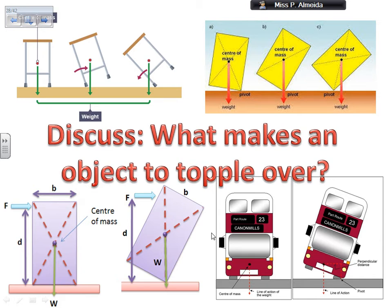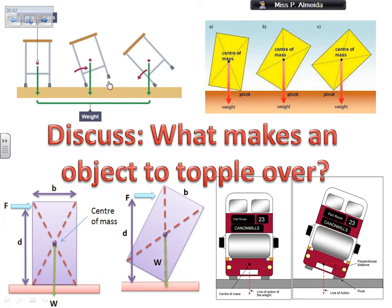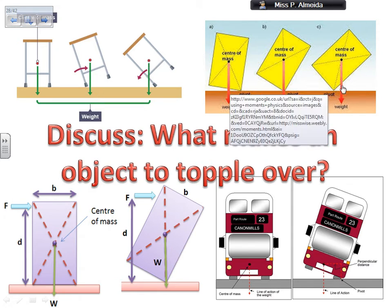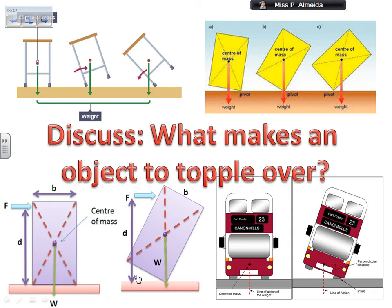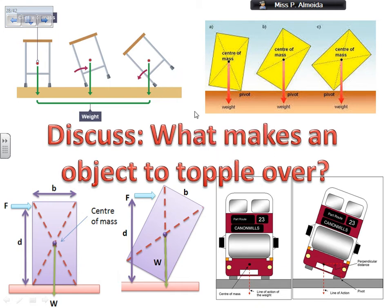So, what do you need to do for an object to be stable or as stable as possible? If you look at all these pictures, you may see that if the center of mass is acting within the base of the object — or within the pivot — the object is stable and not toppling over. But once the line along which the center of mass acts comes out of the base and passes through the pivot, then the object is going to topple over.